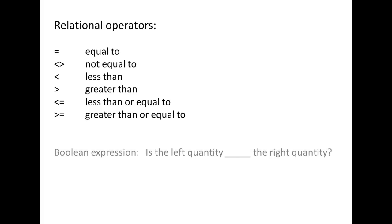Relational operators are used to compare two quantities in a Boolean expression. When you use a relational operator, you are asking the question: is the left quantity — blank — the right quantity, where the blank space is where the relational operator is placed?